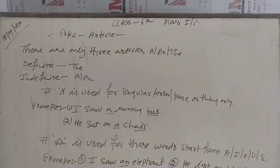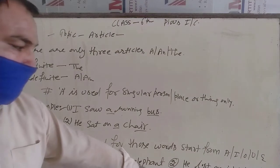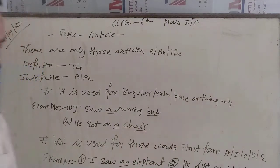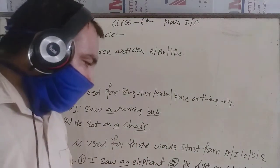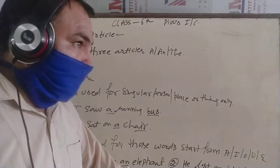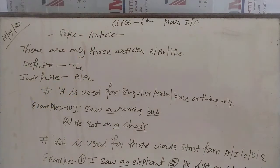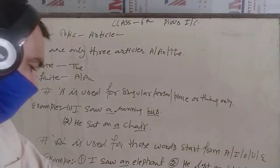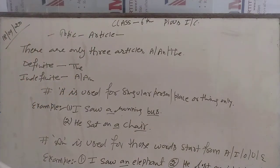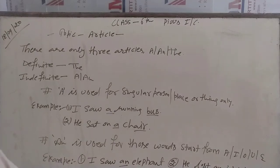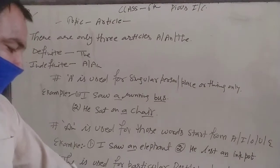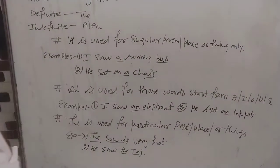Uske baad, The is used for particular post, place or thing. The kis ke liye use hota hai? Particular post ke liye, place ke liye, kisi cheez ke liye. For example: The sun is very hot — humne sun ke liye The laga diya. He saw the Taj — usne Taj ke liye The laga diya.